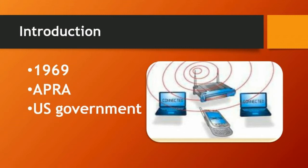The internet was conceived in the year 1969. The Advanced Research Products Agency — that means ARPA — of the US government announced this. It was created with the aim of creating networks all over the world, and it was mostly useful for universities to communicate very easily.